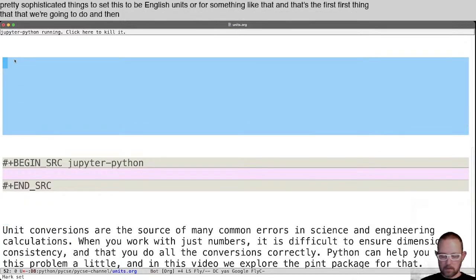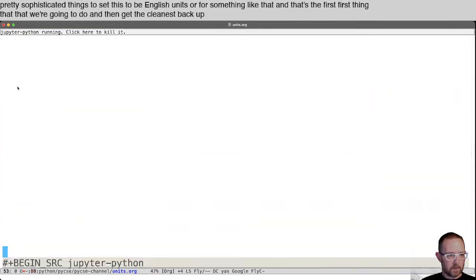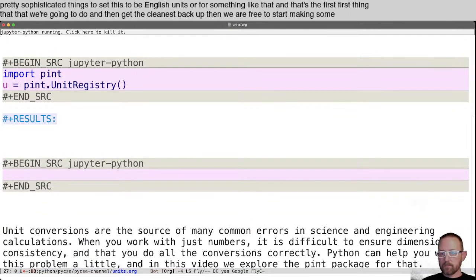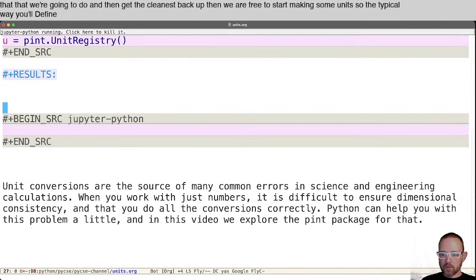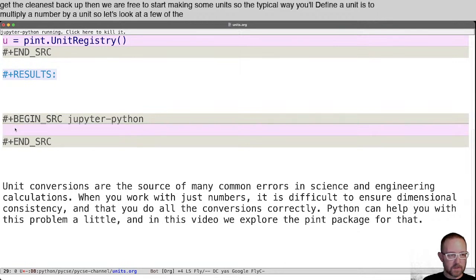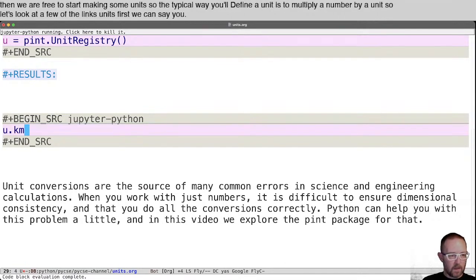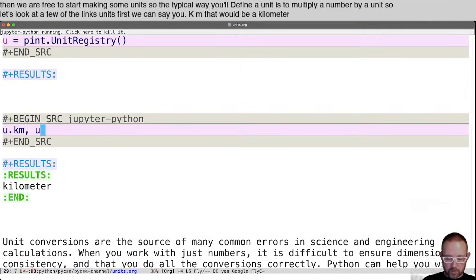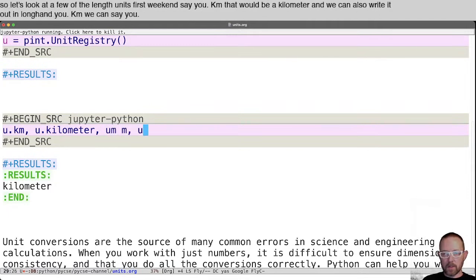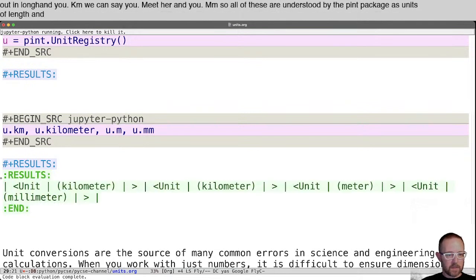And then let's get clean this back up. Then we are free to start making some units. So the typical way you'll define a unit is to multiply a number by a unit. So let's look at a few of the length units. First, we can say u dot km. That would be a kilometer. And we can also write it out in longhand u dot kilometer. We can say u dot meter and u dot millimeter. So all of these are understood by the pint package as units of length. And here you can see the kilometer. These are synonyms for each other, the meter, the millimeter.